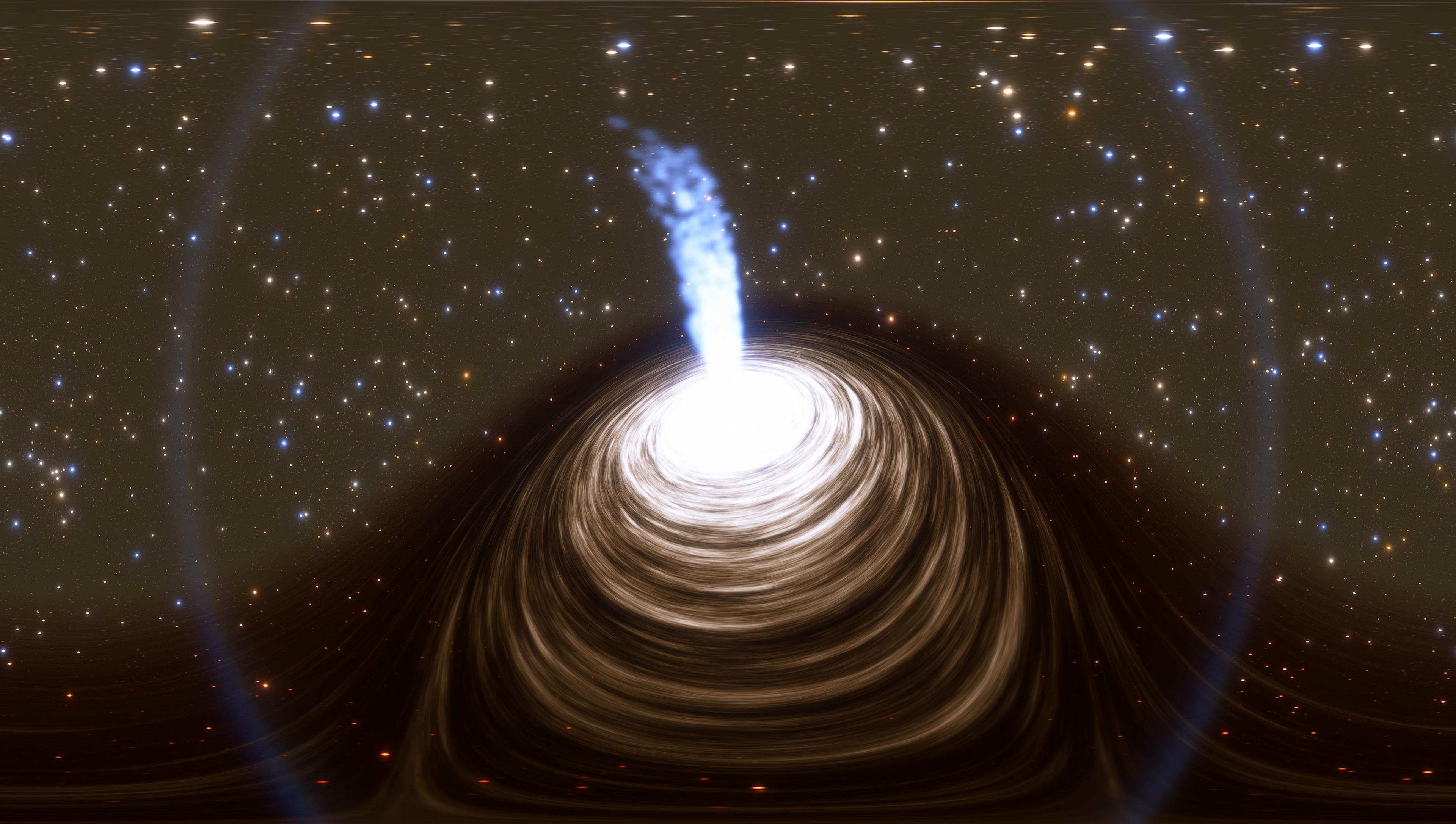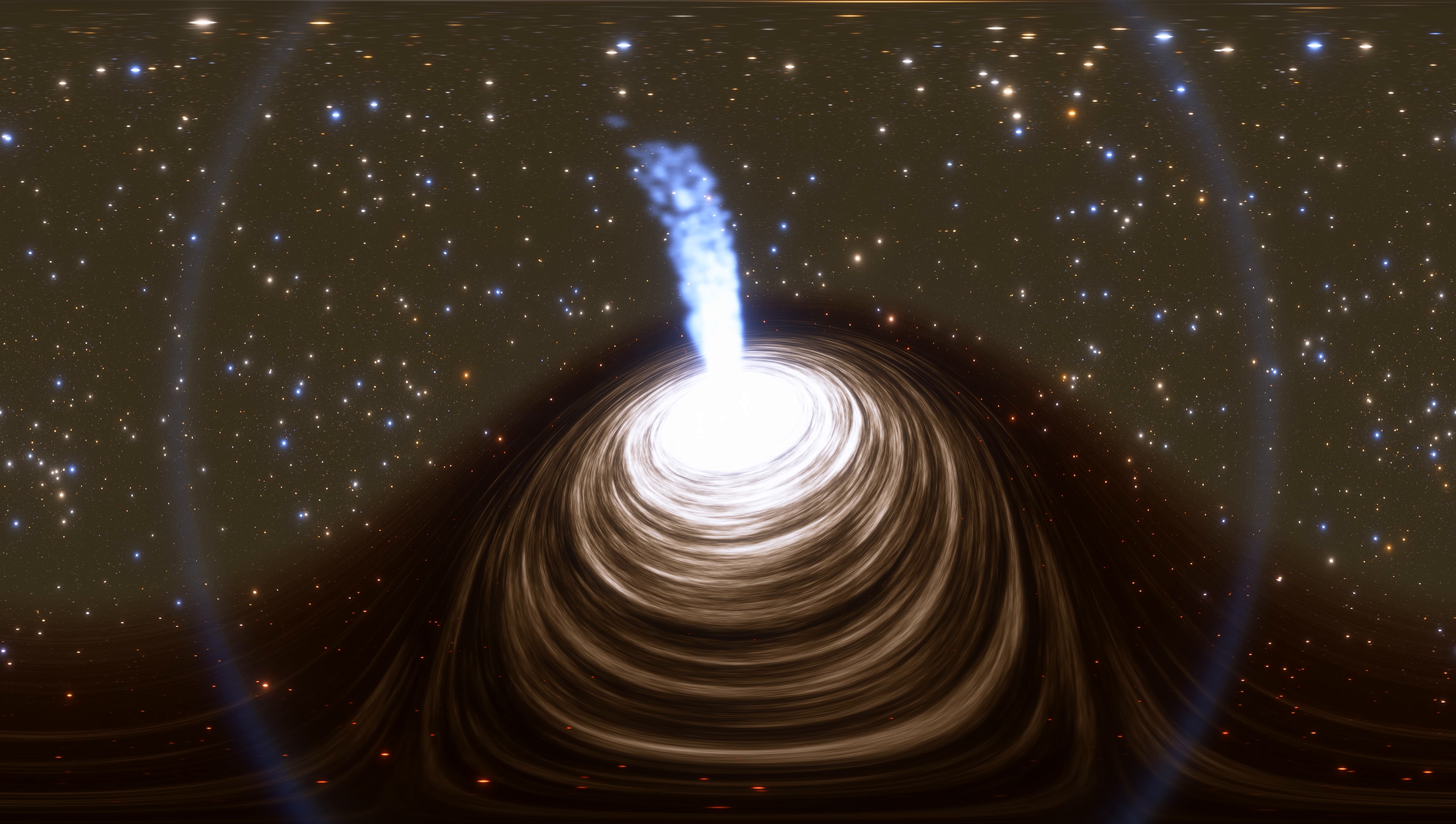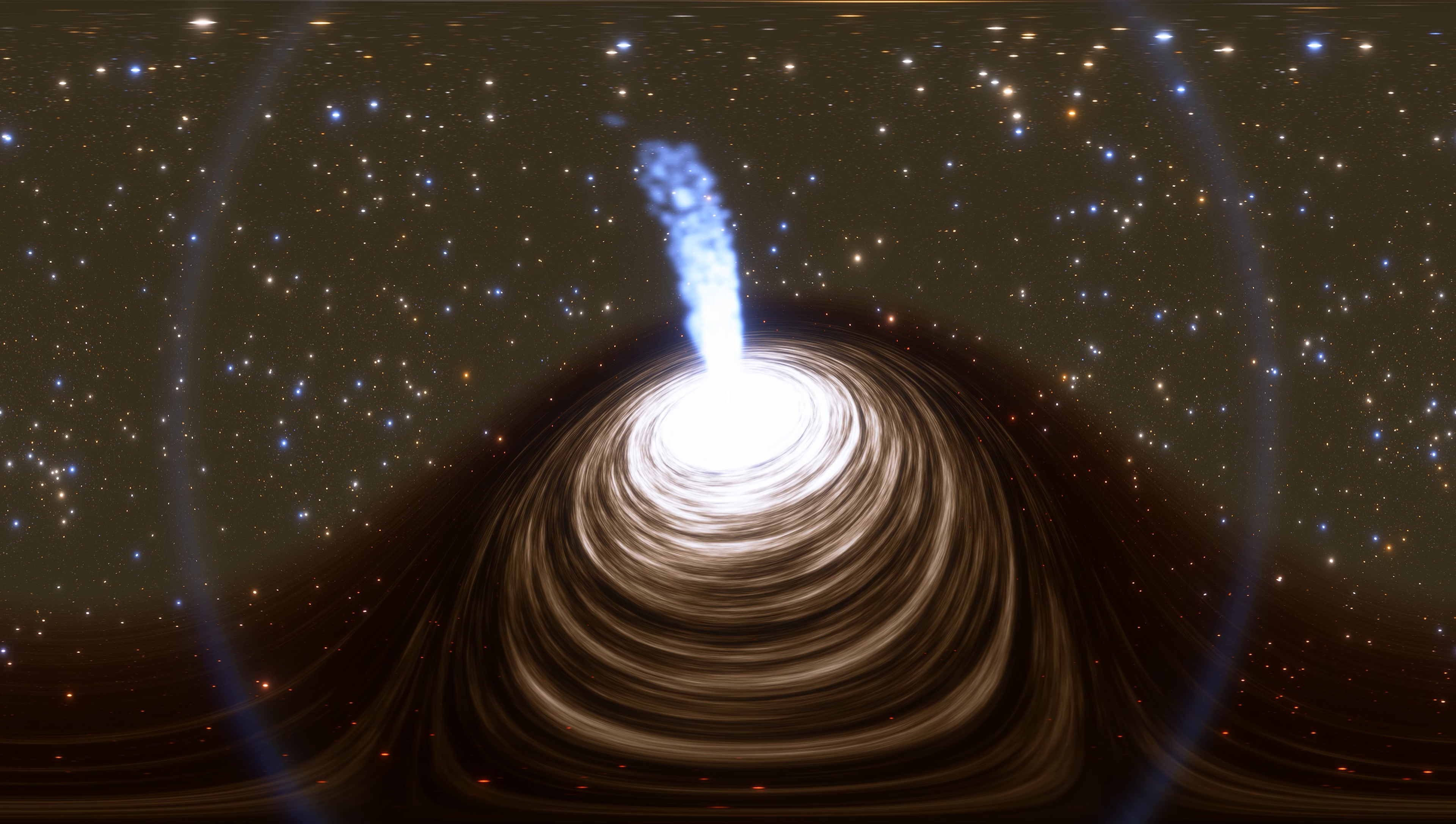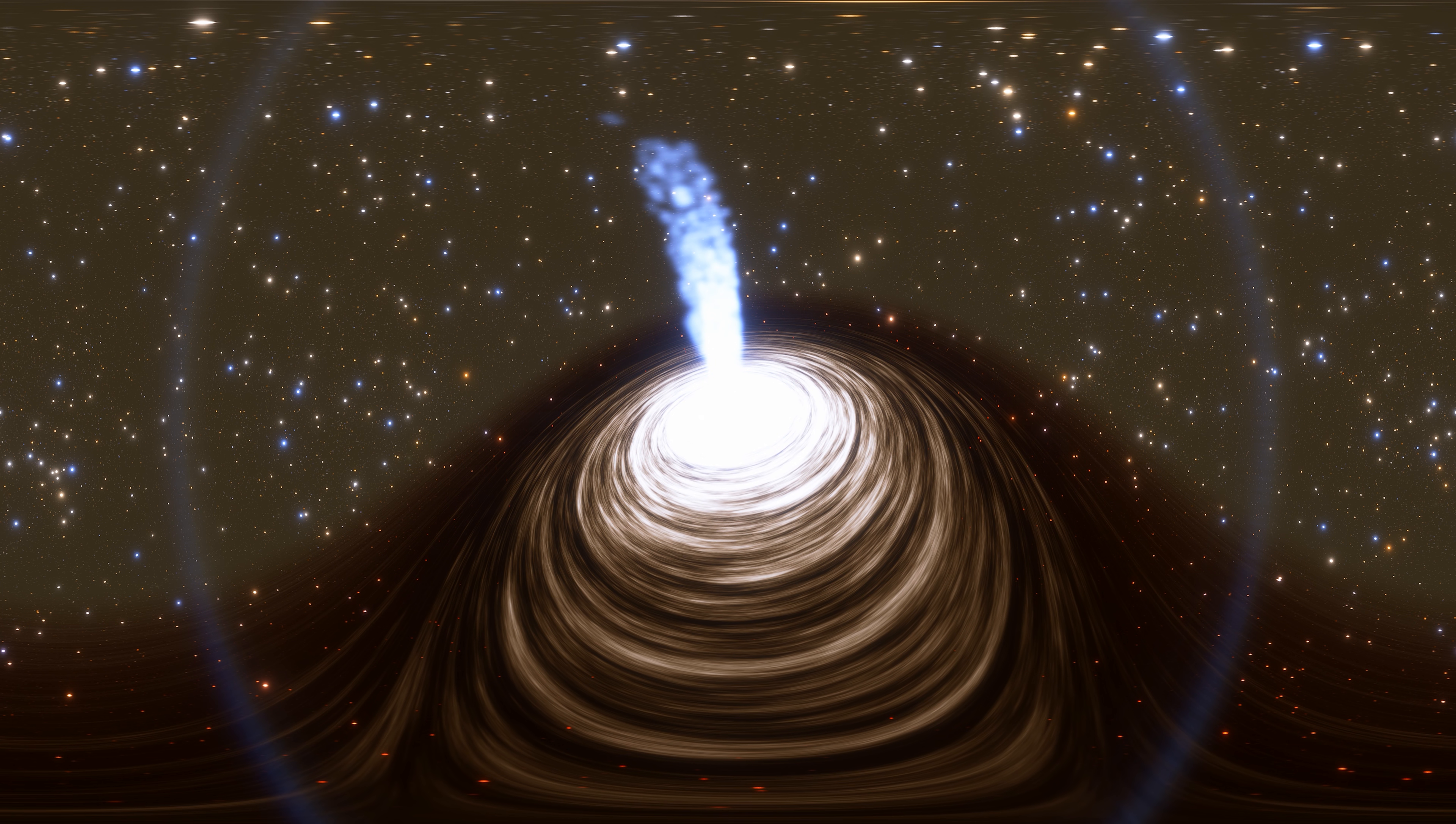Messier 60 is an elliptical galaxy located about 57 million light-years from Earth in Virgo constellation. At the center of this galaxy is a supermassive black hole with a mass of approximately 4.5 billion solar masses. It was discovered by Johann Gottfried Kuhler in April 1779, observing a comet in the same part of the sky.